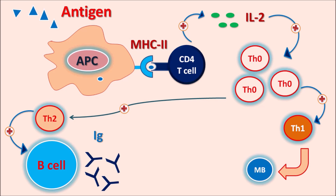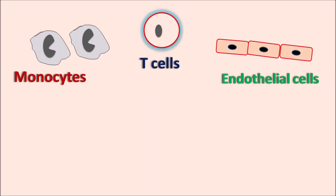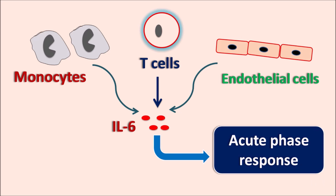During this immune response, from the Th0 lymphocytes, IL-6 is released along with other cytokines. Elevated levels of IL-6 indicate an enhanced immune response and progressive inflammation within the body — that is why IL-6 acts as a biomarker for inflammation. Based on elevated IL-6 levels, we can assess the severity of the infection and inflammation. IL-6 can be released from monocytes, macrophages, T cells, and endothelial cells, and it is responsible for the development of the acute phase response, which involves release of further mediators producing systemic inflammation.